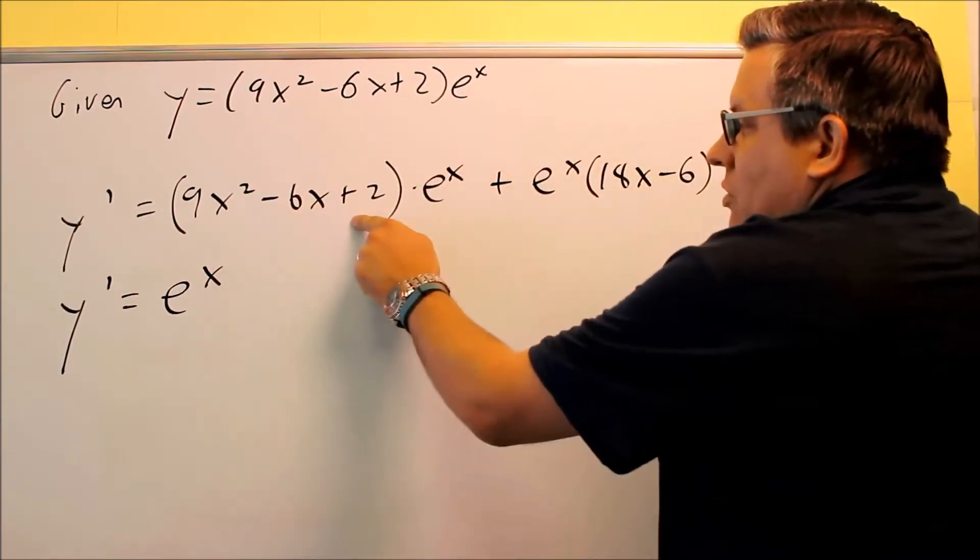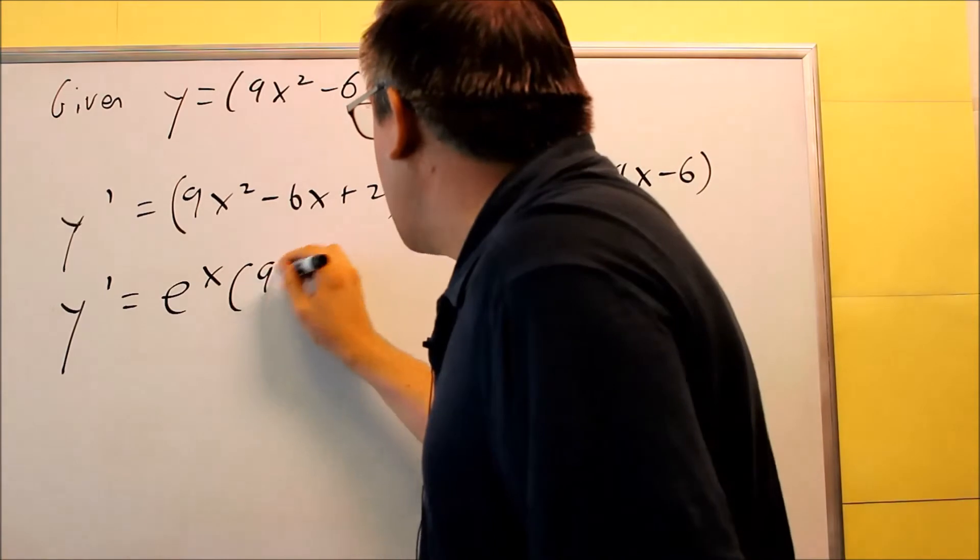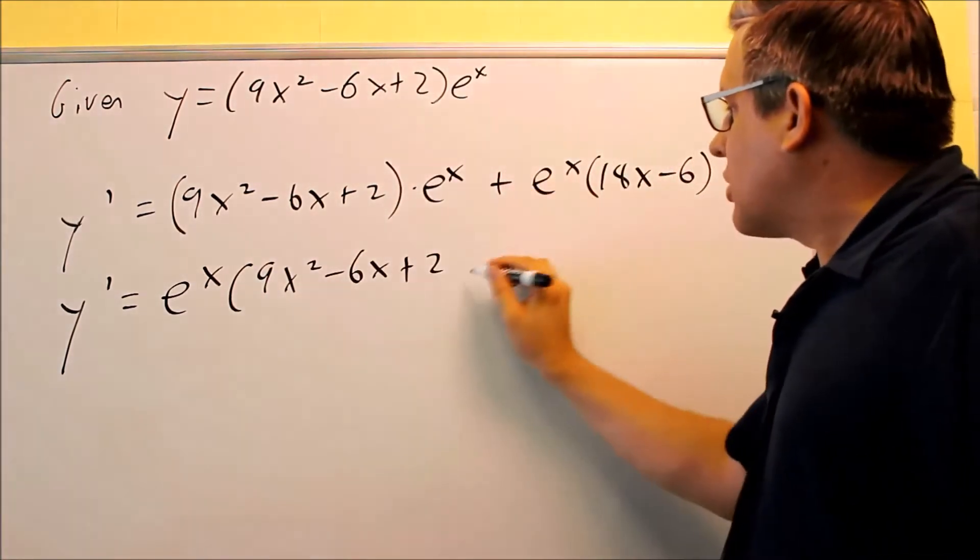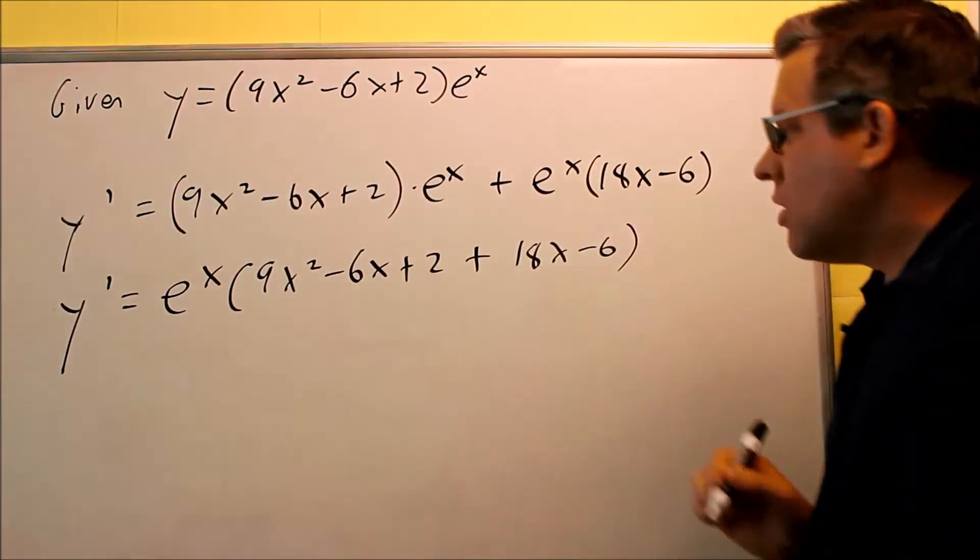what do I have left? I have all this, plus sign, and all of this. So I'll have 9x squared minus 6x plus 2, I got the plus sign from this one, and then I have 18x minus 6.